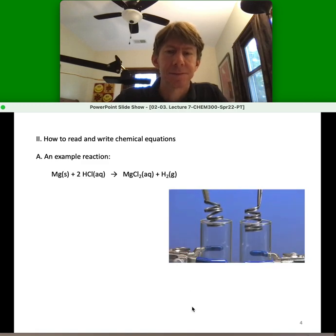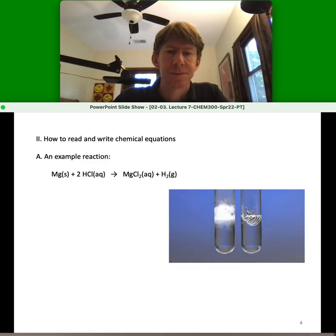Coils of magnesium metal ribbon are added to two test tubes. The test tube on the left contains 0.6 molar hydrochloric acid. The test tube on the right contains 0.3 molar hydrochloric acid. They both react forming hydrogen gas.